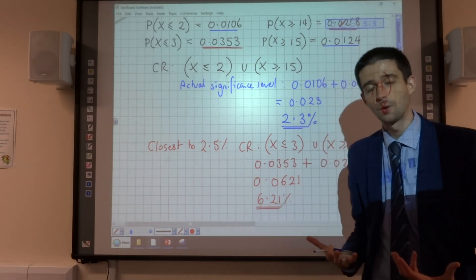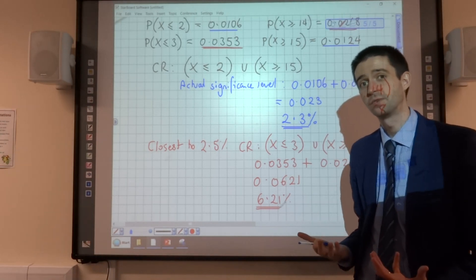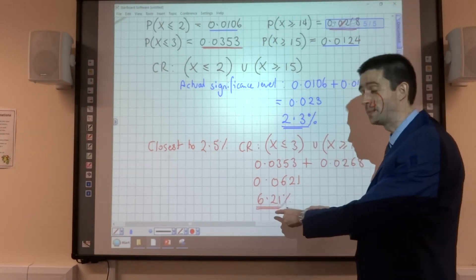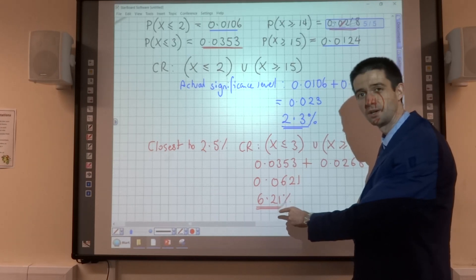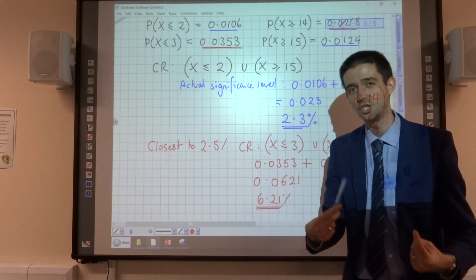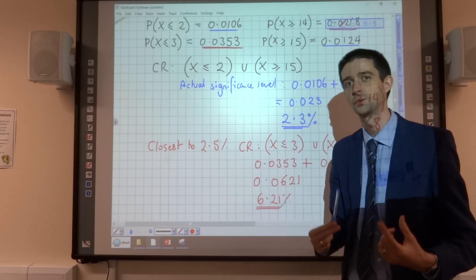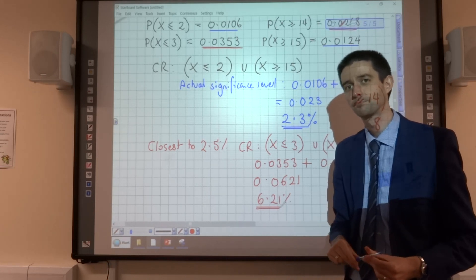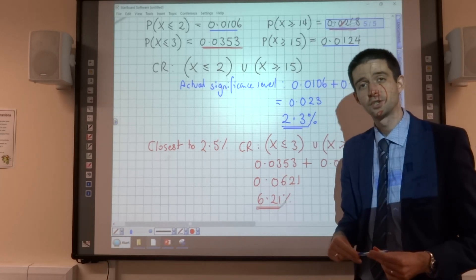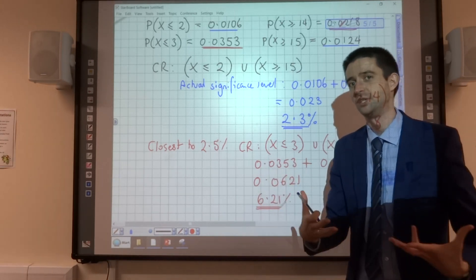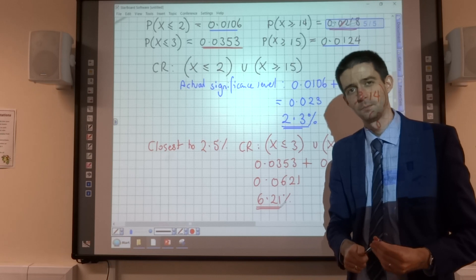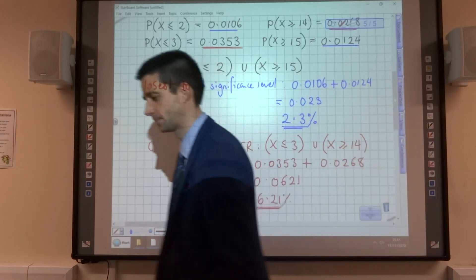So, if you were setting up this experiment, and I said, I want the probability to be close to 5%, you would have to decide if you're happy to have a 6.2% chance of incorrectly rejecting the null hypothesis, because that's what the significance level is. Okay, there we go. Critical regions for a two-tailed test with all the possible permutations and questions covered. Thanks for your company.